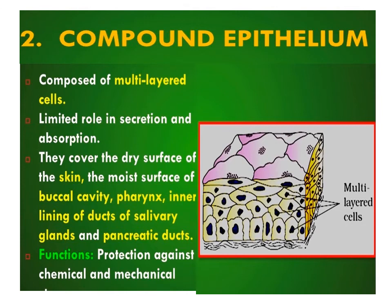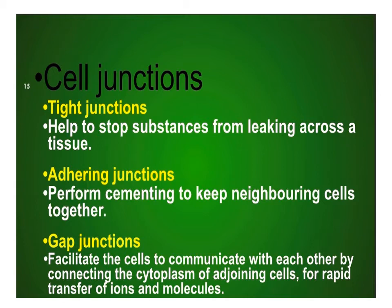Compound epithelium is made up of more than one layer of cells. It covers the dry surface of skin and moist surfaces of the buccal cavity, pharynx, inner lining of ducts of salivary glands, and pancreas. The main function of compound epithelium is to provide protection against chemical and mechanical stress.